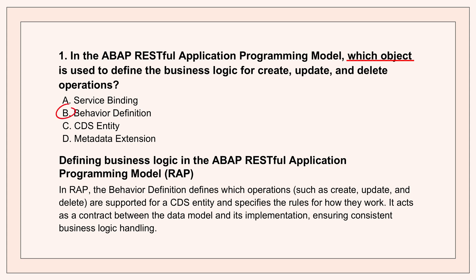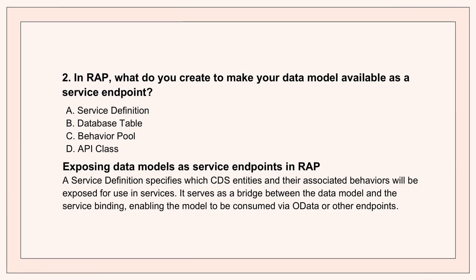So you've got your data model and you've defined its behavior with the behavior definition. But how do you make that accessible as a service endpoint for other apps or UIs? For that, in RAP, you create a service definition. This is the object that takes your CDS entities and their defined behaviors, and bundles them up as part of a specific service. The service definition specifies which parts of your data model are included, making them ready for service binding, which connects it to the outside world so it can be consumed — it's the standard way you open up your RAP application's data.